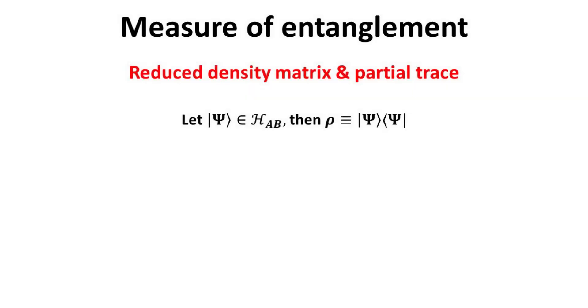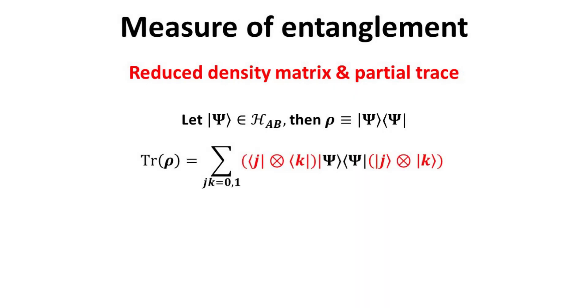Now that we have established the difference between separable and entangled composite states, a natural question is: how does one measure the degree of entanglement? Here we introduce the concept of partial trace and reduced density matrix, which has great utility in the study of composite wave functions. Consider a composite two-qubit state function given by the big psi ket. The composite density matrix rho is then given by its outer product. We recall that the trace of rho is given by the sum of inner products with the basis vectors of the composite state — for a two-qubit case, there are four basis states. The trace of rho returns a single-valued number.